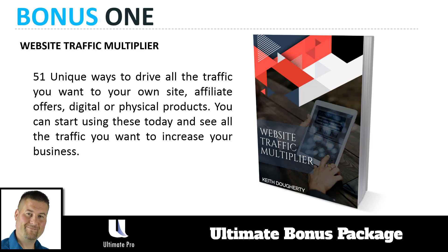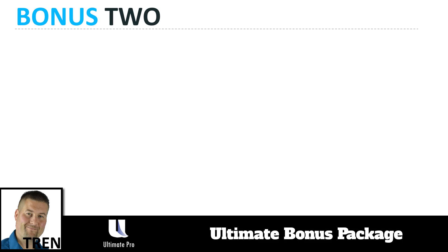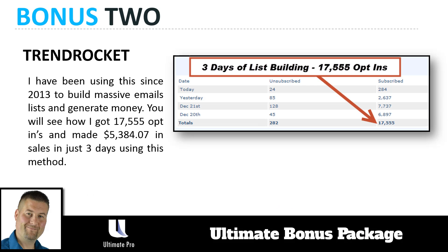Bonus number two is Trend Rocket — a phenomenal training I put together. I've been using this tactic since 2013 to build massive email lists and generate money. In this training you'll see how I got 17,550 opt-ins and made over $5,300 in sales in just three days. It's a phenomenal method that continues to work, and when you buy WP Ultimate Pro today you'll get this absolutely free.